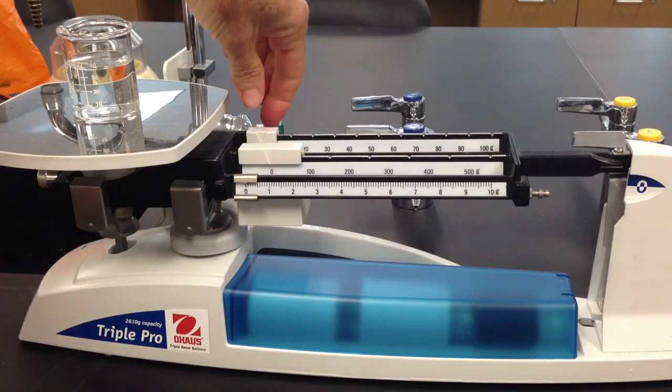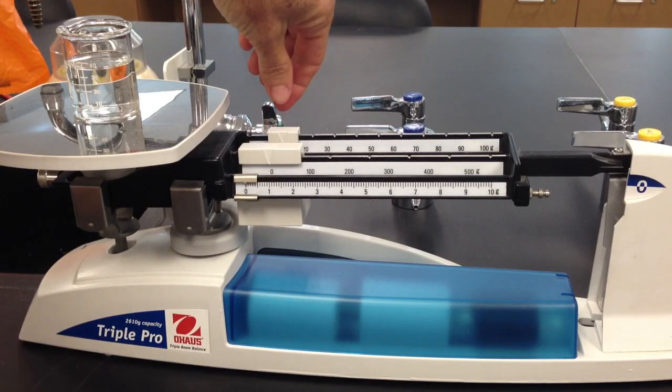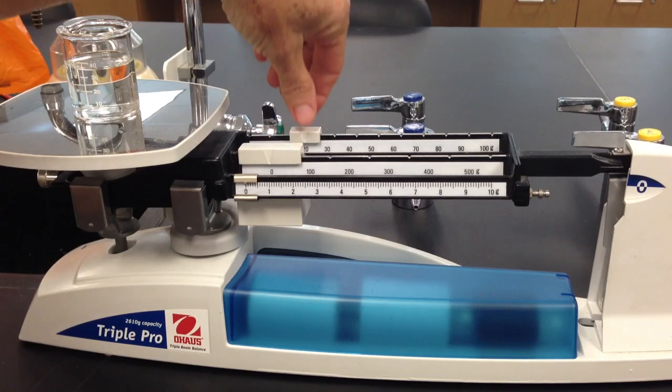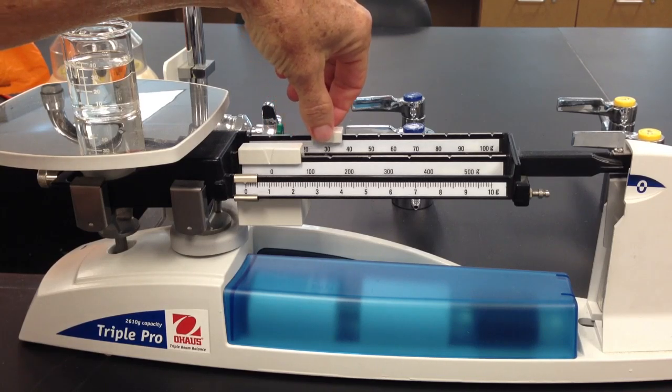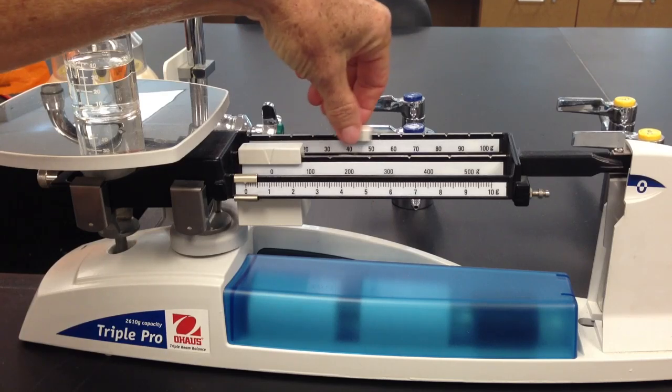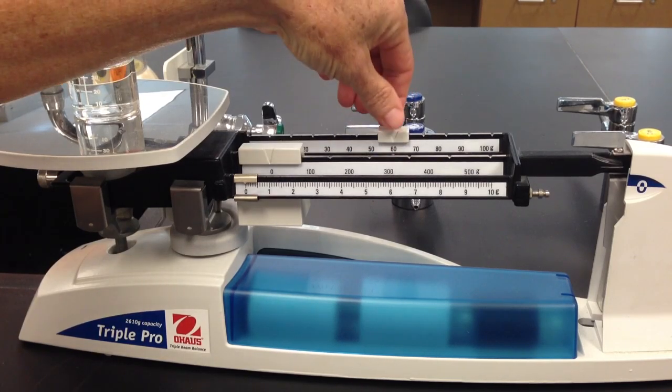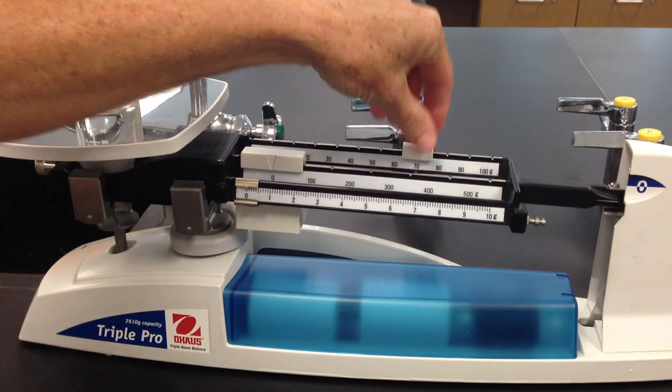We're then going to go to the tens beam and move the weight into the grooves until we find the mass that makes the beam fall too heavy. So we continue down: 50, sliding it right into the groove, 60, 70 is too heavy.